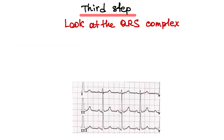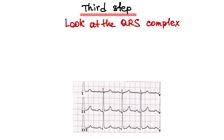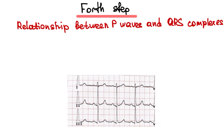Third step: look at the QRS complex — is it narrow or wide? Fourth step: do you see the relationship between P waves and QRS complexes? Do you see a P wave before every QRS complex and a QRS complex after every P wave?